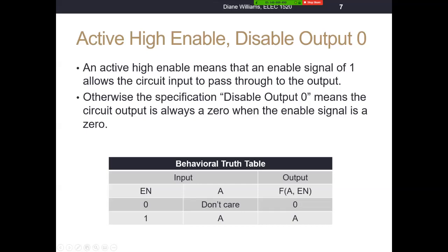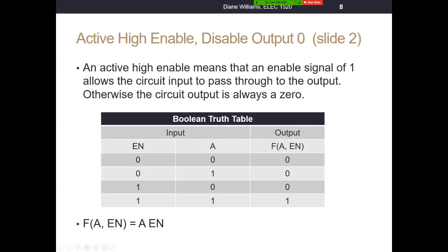Now we can expand that to a Boolean truth table. This is the same circuit — active high enable, disable output zero. Whenever enable is a zero, we want a fixed output of zero, so the circuit output is a zero whenever enable is zero regardless of what's on the input. But when the circuit's enabled — active high enable means enable is a one — whatever's on A can flow through to the output. When enabled and A is a zero, the output is zero; when enabled and A is a one, the output is a one. Solving for the single one, our Boolean expression is F(A, EN) = A AND EN.